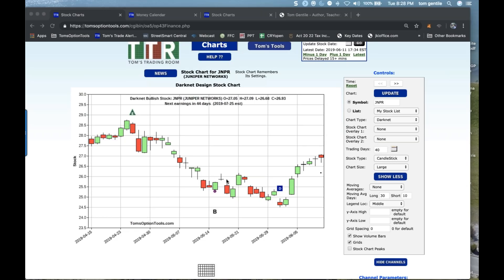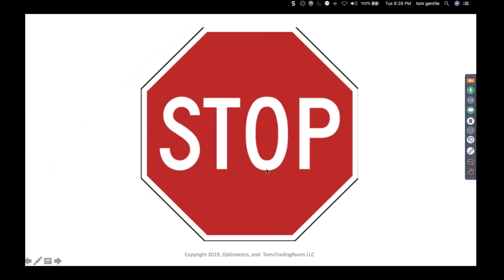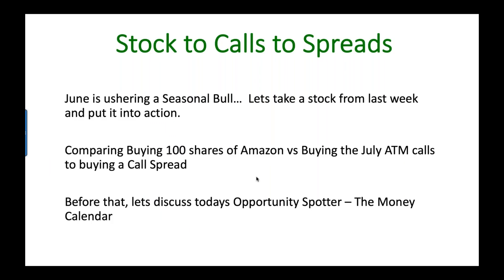June is ushering in the seasonal bull. Looking at bullish months: mid-February to end of March is seasonally bullish, and November/early December is seasonally bullish. But one of the best clusters of seasonal bullishness is the end of June and the first two to three weeks of July. I'm a pattern guy — I go with what repeats itself time and again. We're going to compare buying 100 shares of Amazon versus buying at-the-money calls versus buying a call spread.